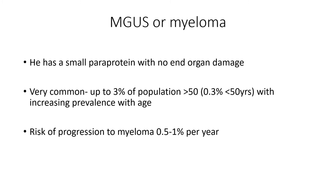This is very common — about 3% of the population over 50 will have a small paraprotein. It's about a tenth of that under 50. As we get older, that prevalence increases decade on decade. His risk of progression to myeloma is between half to 1% per year. So that's worth bearing in mind — these patients do need monitoring.